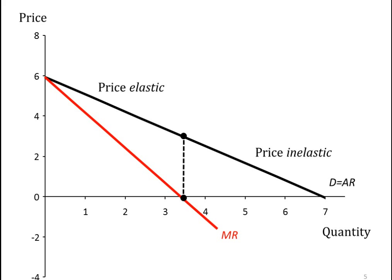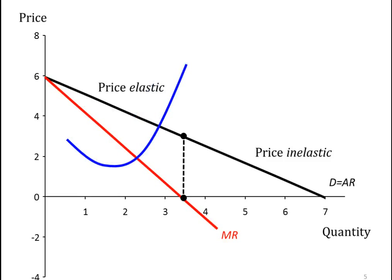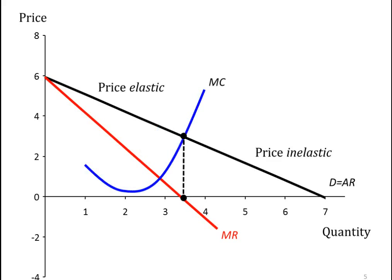Let's draw in a standard marginal cost curve. The optimal output is determined by where marginal revenue equals marginal cost. Notice the firm is producing within the price elastic range of the demand curve. If we shift the marginal cost curve to different positions, the optimal output point still falls in the elastic range of the demand curve each time.